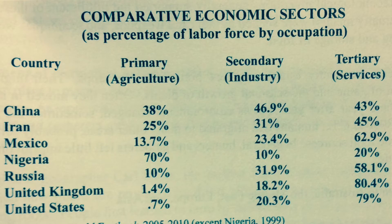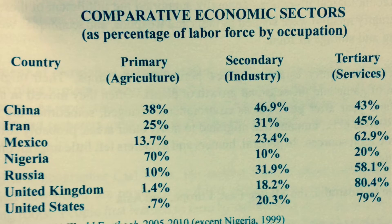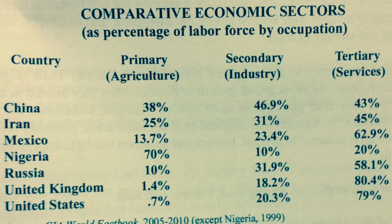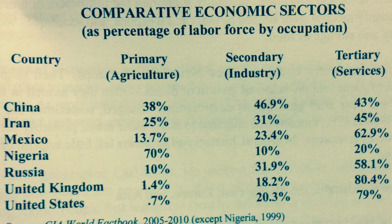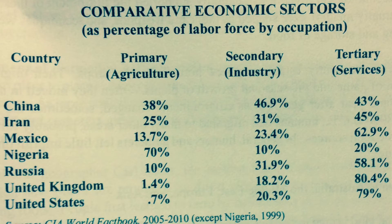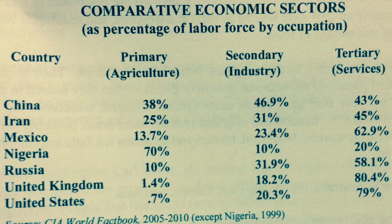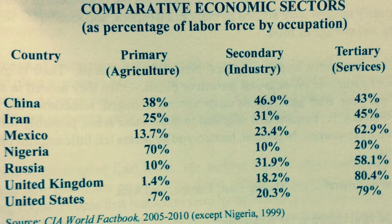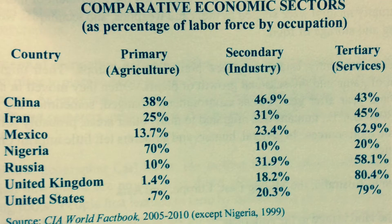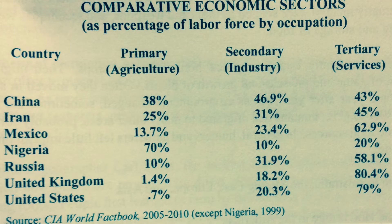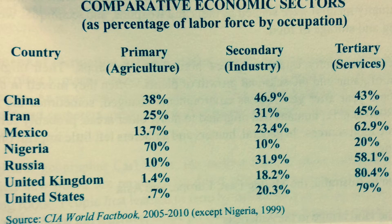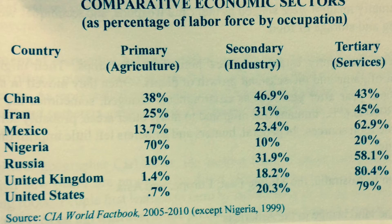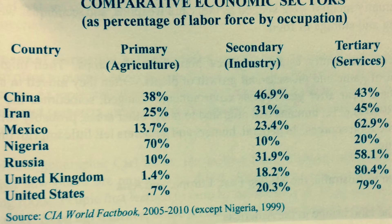Looking at this data table and comparing economic sectors: the United Kingdom is a post-industrial society with only 1.4% in agriculture and 80.4% in services. The United States has 0.7% in agriculture and 79% in services. Russia has moved into post-industrialism as well. Mexico has moved away from agriculture at 13.7% toward services at 62.9%, as has Iran to a lesser extent. Despite its recent economic boom, 38% of China's population is still in agriculture, and Nigeria has the largest share — 70% — in the primary sector.